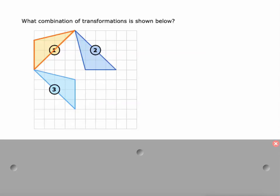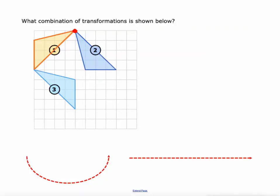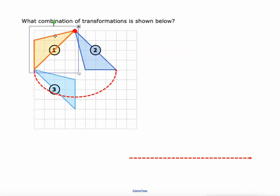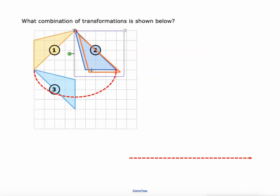Alright, figure one — I'm looking at a rotation again here. Where's my center of rotation? It's right there. The easiest point to follow is probably that one right there — if it'll just rotate right around that point. So there's a rotation, and that could have been done in a single rotation.